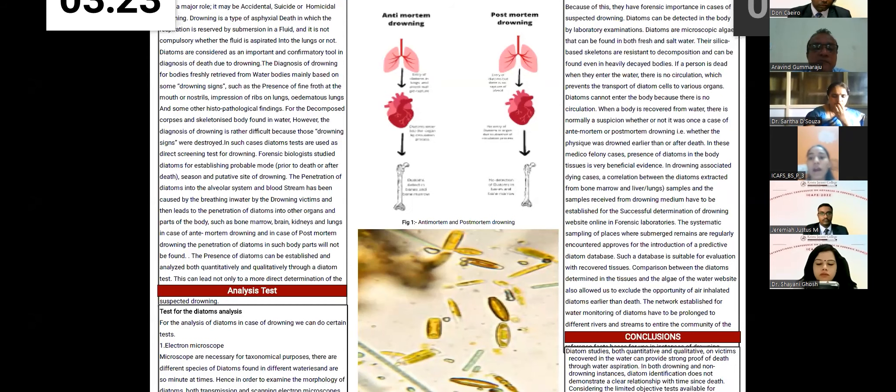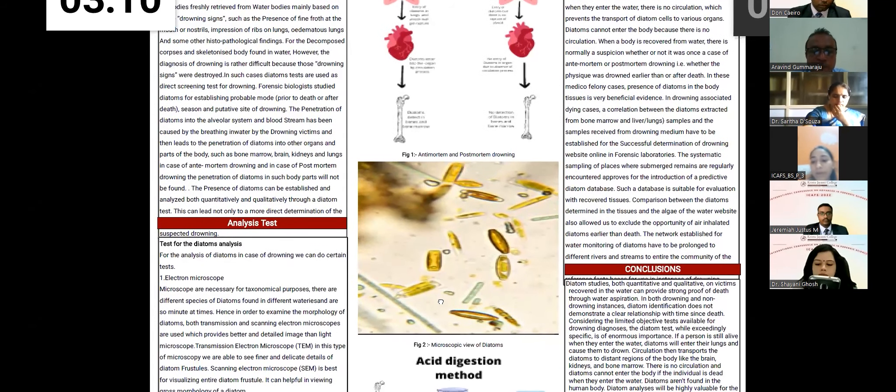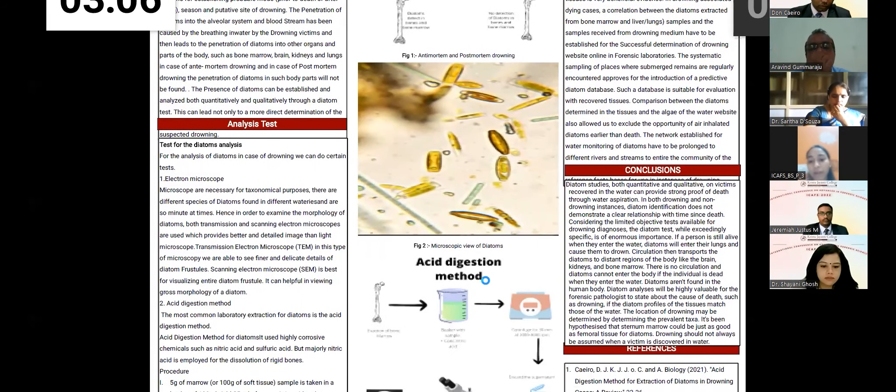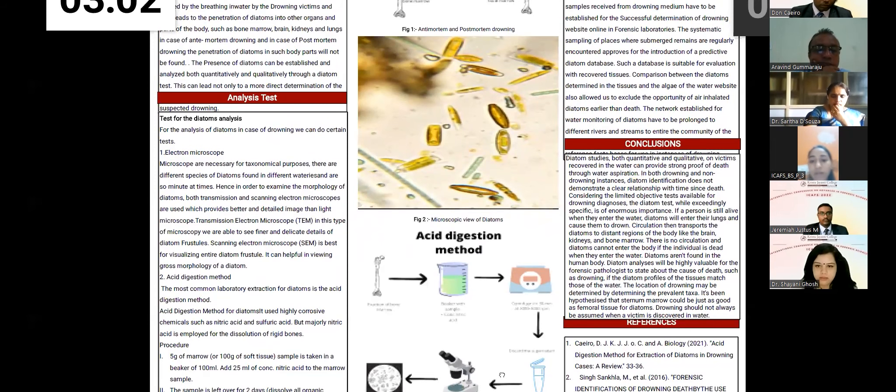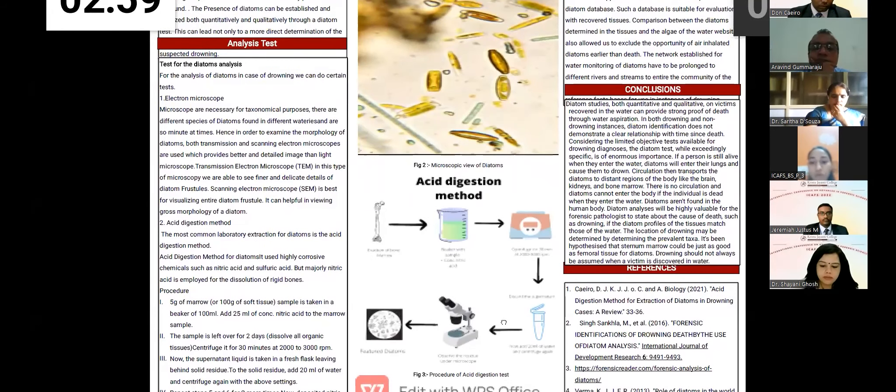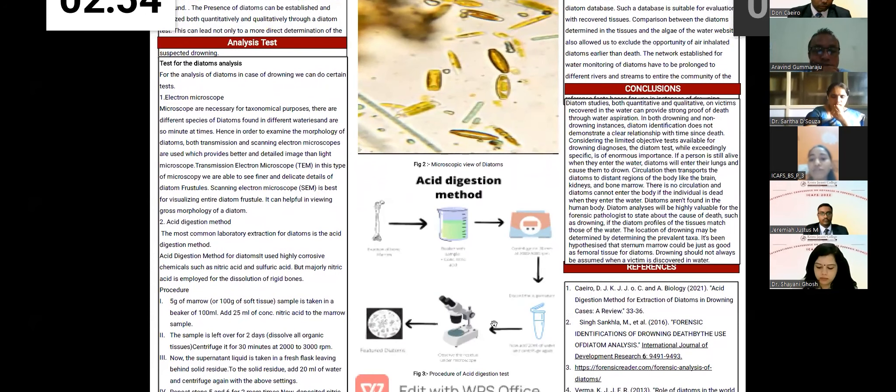Diatoms cannot tell us about the time since death, but diatoms can be very helpful in identification of the place of death. Because of the morphology of diatoms, whether the body found is in salty water, marine water or fresh water, we can identify by using the frustule test. We can do a microscopic test. Electron microscope is better than light microscope. We can identify the morphology using transmission electron microscope. In this microscopy, we are able to see the finer and delicate details of the diatom frustules. Frustules are basically the cell wall structures of diatoms, which can be identifiable. And in scanning electron microscope, it is best for visualizing the entire diatom frustules, which is helpful in viewing the gross morphology of the diatom.